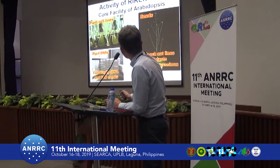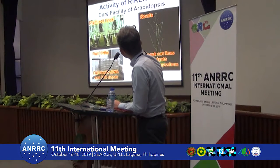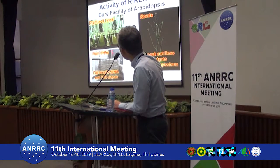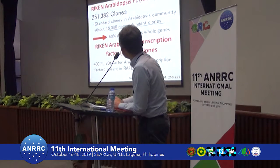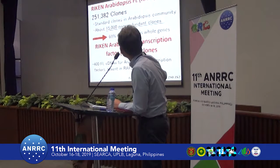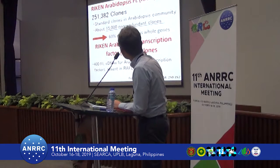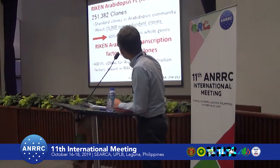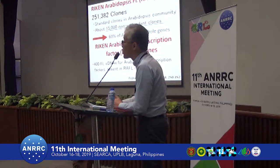This is a simple summary of our activities. We have three core facilities: plant cell lines, Arabidopsis seeds, and plant DNAs. We collect more than 250,000 Arabidopsis cDNA clones. These clones are called RAFL clones — the RAFL clone is a standard clone in the Arabidopsis community. We have about 15,000 clones, covering about 60% of the Arabidopsis coding genes, which we can distribute.